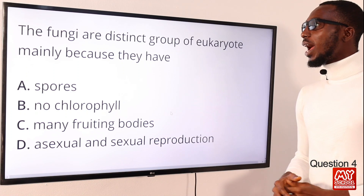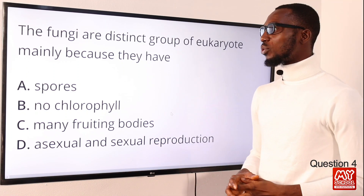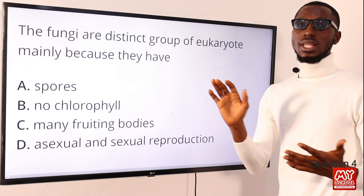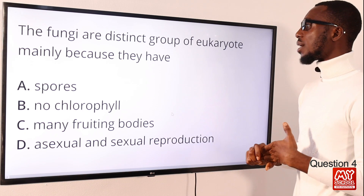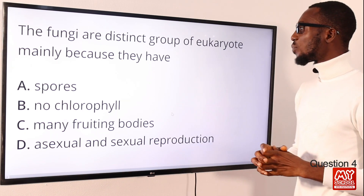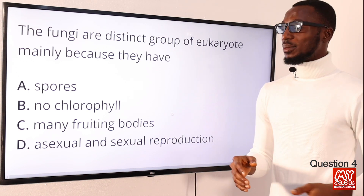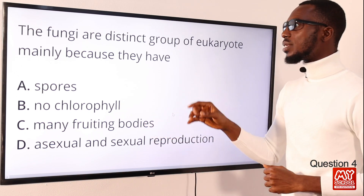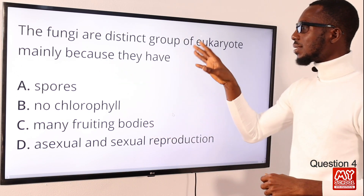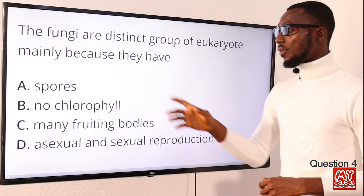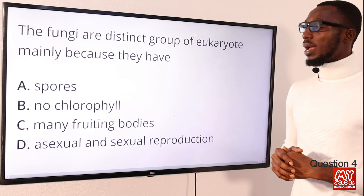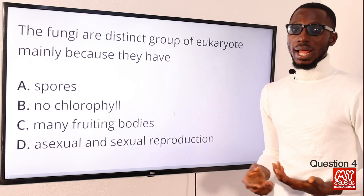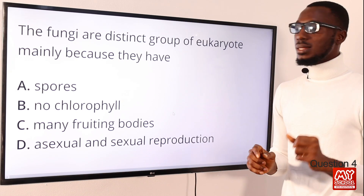Question 4: fungi are a distinct group of eukaryotes mainly because they have what? When you talk about eukaryotic cells, we are talking about a complex setup — a well-defined nucleus and the presence of organelles. Let's examine reasons why fungi are a distinct group of eukaryotes. Is it the formation of spores? This is not peculiar to them — you can find that in kingdom Protista as well as in kingdom Fungi, so this does not make them distinct.